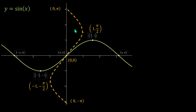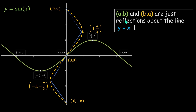We got a nice curve, but wait — why did I draw it as a curve and not something linear? Let's think about it. The points (a, b) and (b, a) are just reflections of each other about the line y = x.